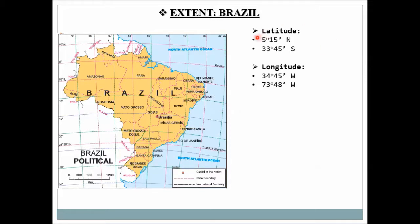Brazil's latitudinal extent is approximately 5 degrees 15 minutes North to 33 degrees 45 minutes South. The longitudinal extent runs from approximately 34 degrees 45 minutes West to 73 degrees 44 minutes West. These are the latitudinal and longitudinal extent values for Brazil.